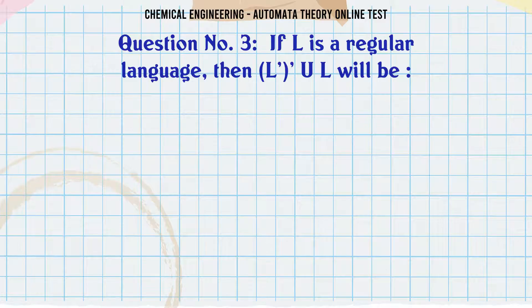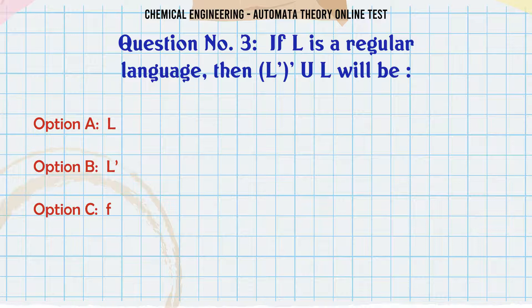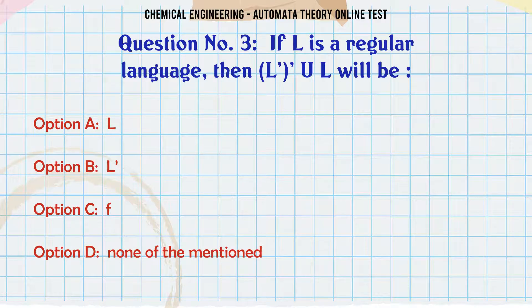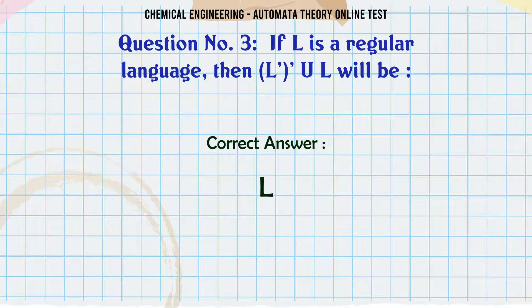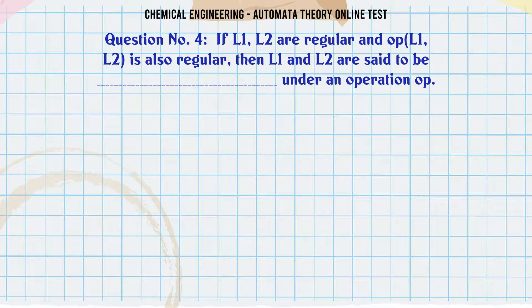If L is a regular language, then L ∪ L will be: A. L, B. L, C. F, D. None of the mentioned. The correct answer is L.